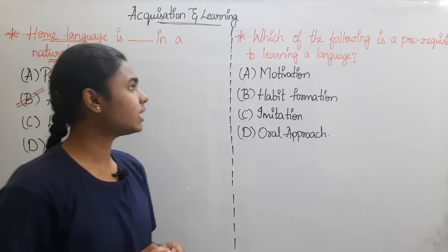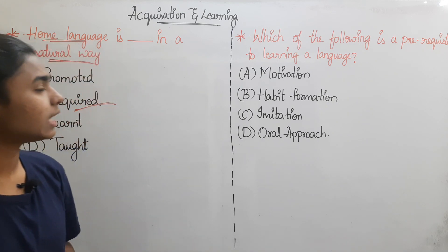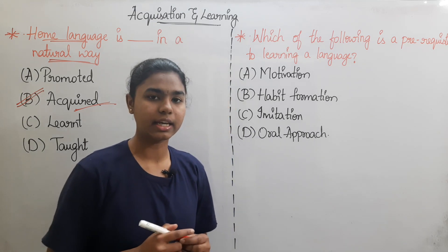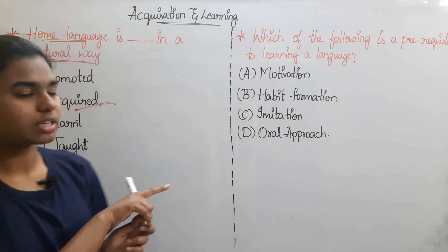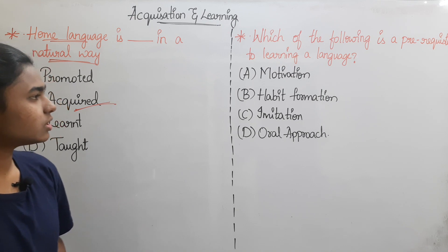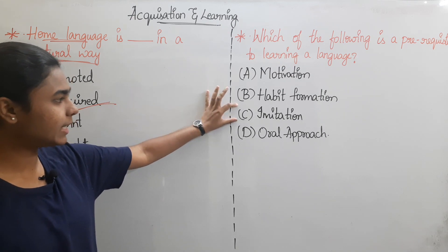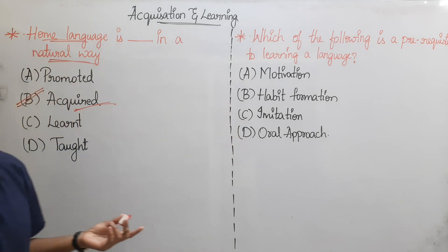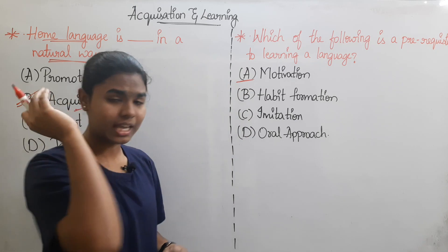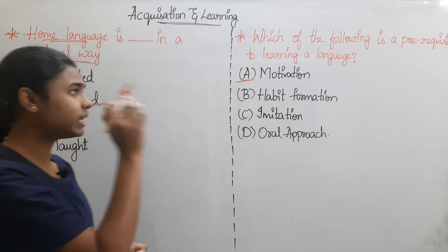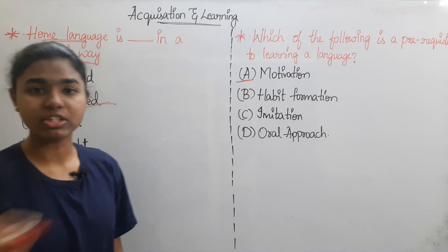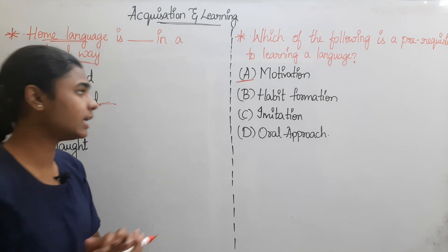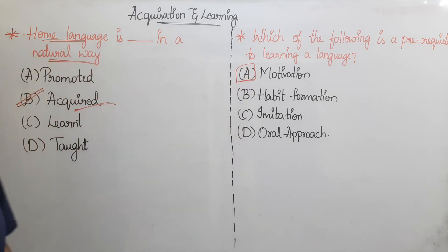Which of the following is a prerequisite to learning a language? Option A: Motivation. Option B: Habit Formation. Option C: Imitation. Option D: Oral Approach. The correct answer is Motivation. If you have motivation for what you are doing, that is the prerequisite. The correct answer is Option A — Motivation.